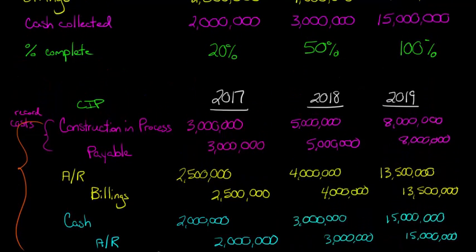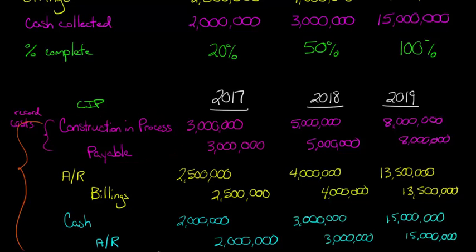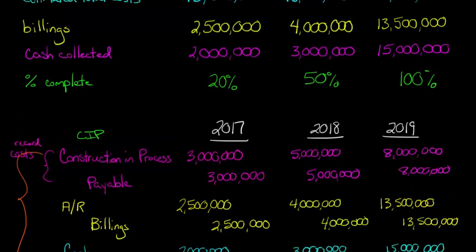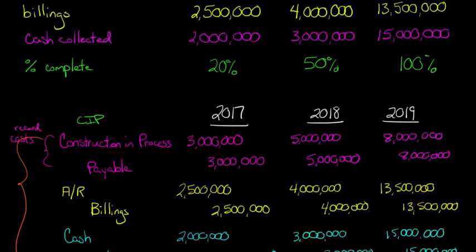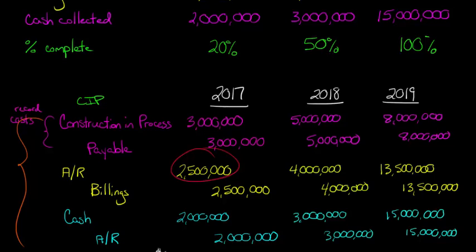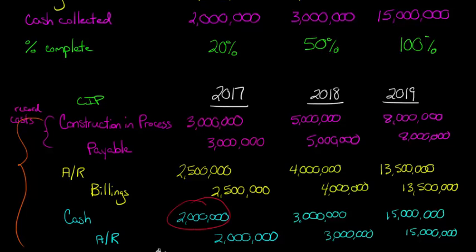If we think about the journal entries for each method, a lot of them are actually the same. Under either method, we debit Construction in Process (CIP) and credit payable or cash for actual costs incurred — so in 2017, $3 million of actual costs means we debit CIP and credit payable. The billings entries are also the same regardless of method: debit receivable and credit billings — for example, $2.5 million in 2017. And the cash collected entries don't change either: debit cash and credit receivable — $2 million in 2017.